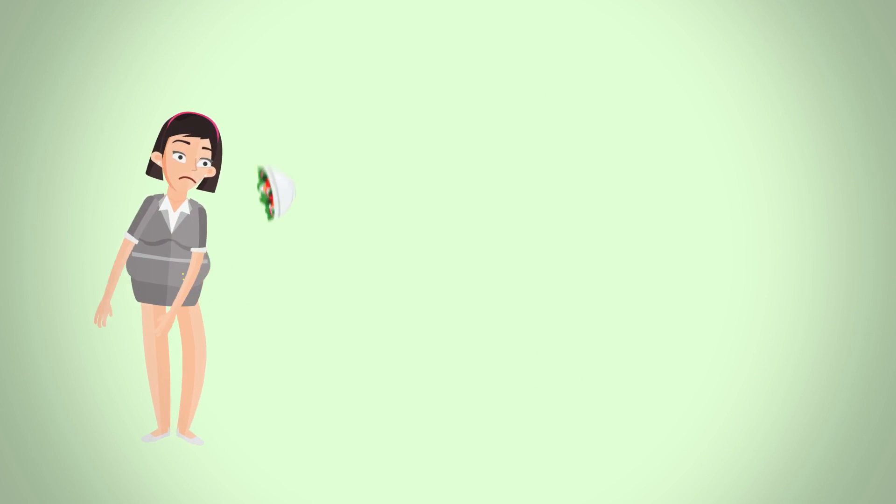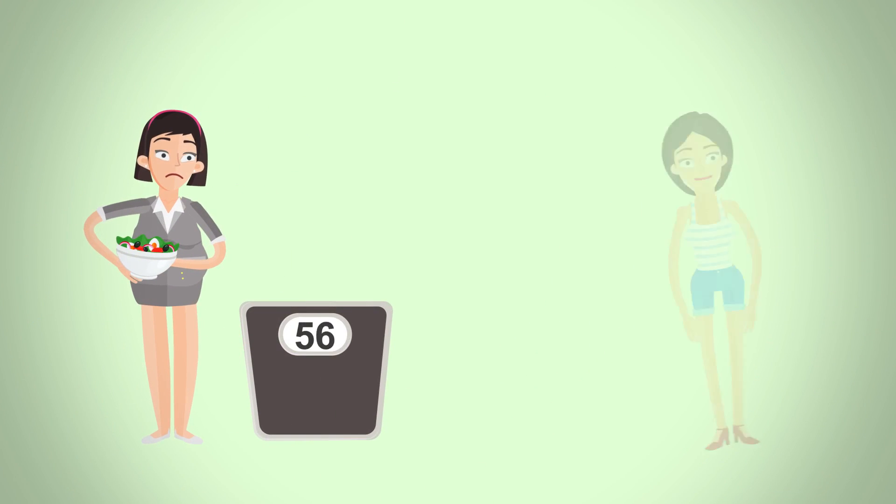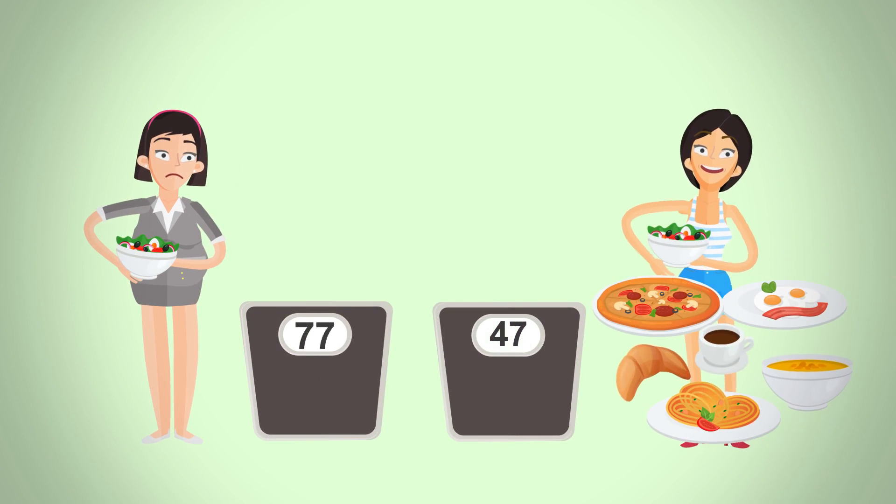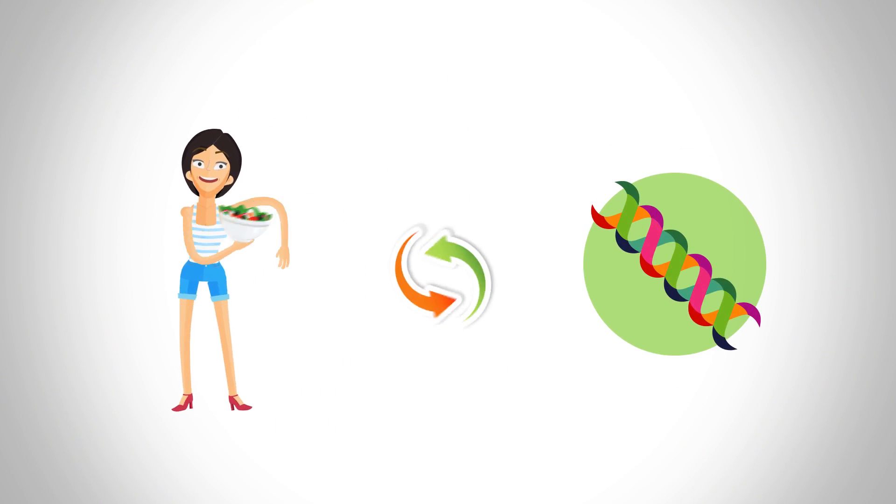We know some individuals can eat very little and gain weight, while some individuals can eat a lot and be slender. This is due to genetics and how our body metabolizes foods.